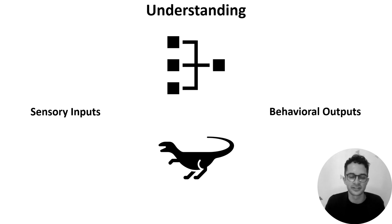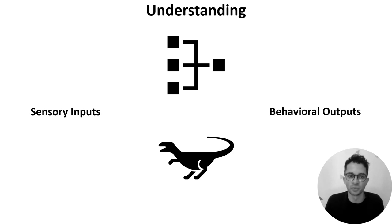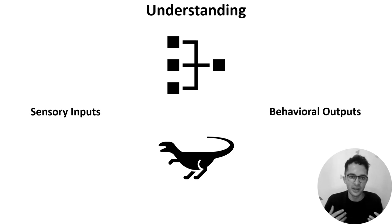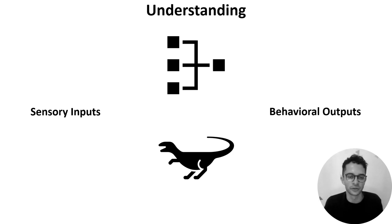Both neuroscientists and machine learning researchers are interested in this question for a variety of reasons, like using knowledge from biology to improve artificial neural networks, or building brain-machine interfaces which record neural activity and use it to control various devices. This week's videos will cover three topics related to understanding neural networks: how to observe neural activity, how to analyse it, and how to manipulate it.